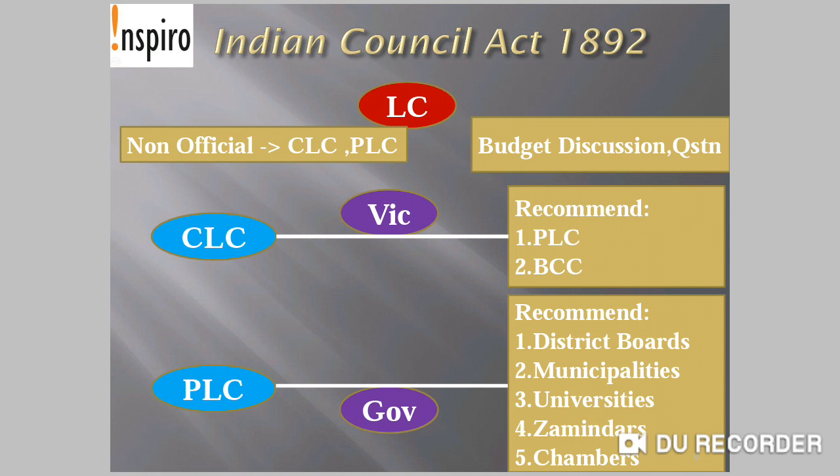In the Central Legislative Council, the Viceroy could nominate some members based on recommendations from the Provincial Legislative Council and the Board of the Bengal Chamber of Commerce. In the Provincial Legislative Councils, the Governor could nominate some members, with recommendations received from District Boards, Municipalities, Universities, Zamindars, and other trade chambers.